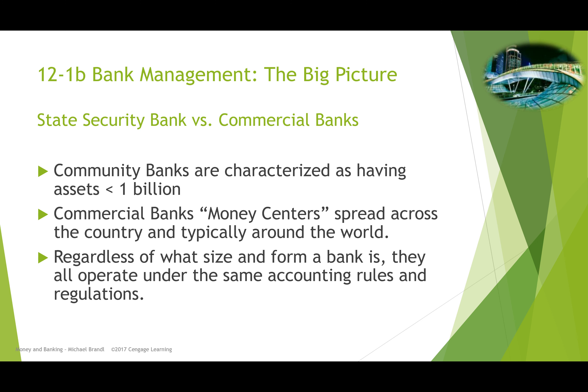Community banks usually have only a few branches. For example, American Bank in Corpus Christi is a fairly large community bank but has only about six branches. By contrast, banks like Wells Fargo or JP Morgan Chase have hundreds and hundreds of branches. Community banks are simply relatively small banks.